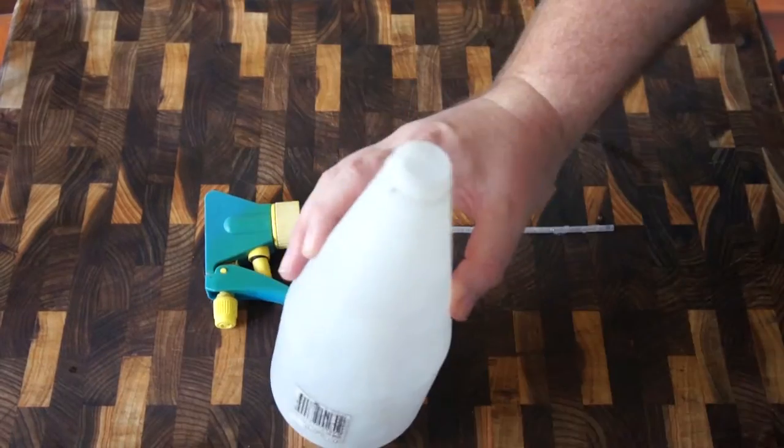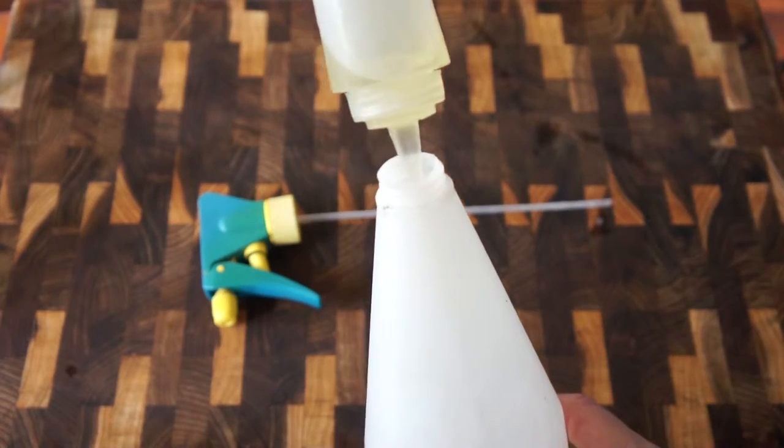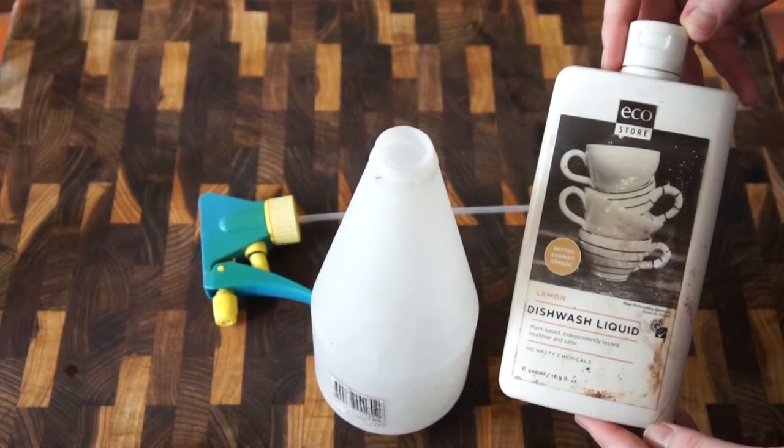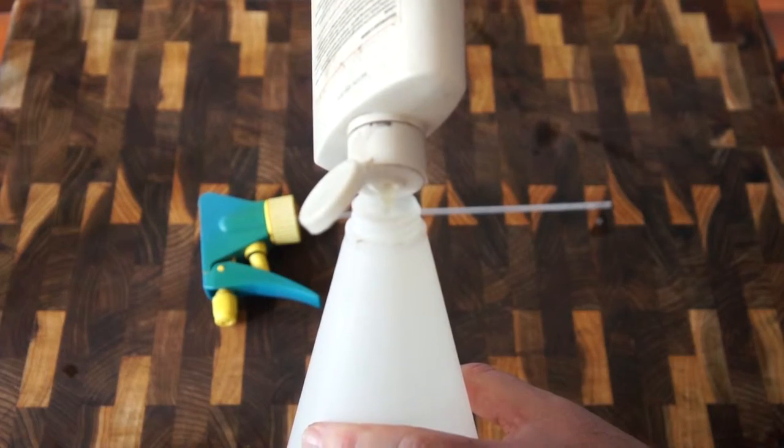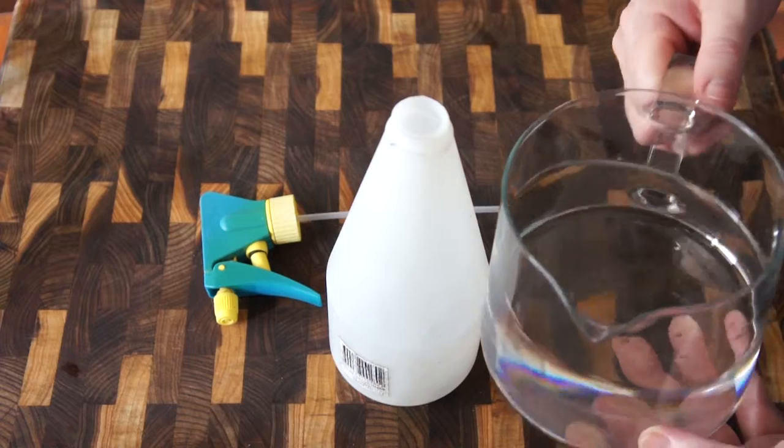Start by unscrewing the cap and chucking in around half a cup of vegetable oil and about one to two teaspoons of eco-friendly dishwashing liquid, and then you're going to top that up with around 500ml of water.